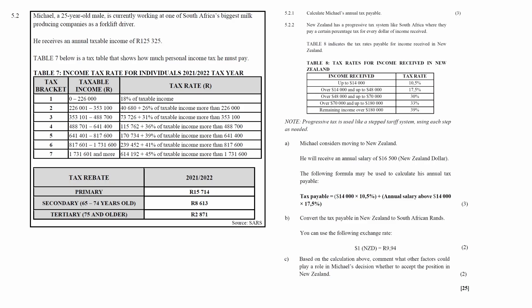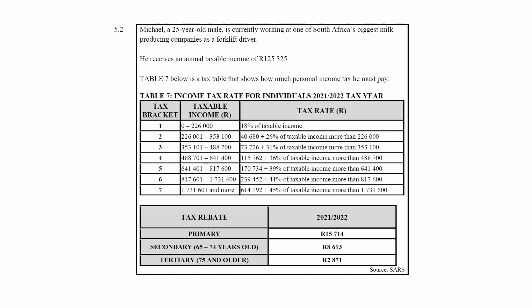Question 5.2 consists of four finance questions designed to assess your understanding of personal income tax. You are given a context where a 25-year-old male is currently working in one of South Africa's biggest milk producing companies as a forklift driver. He receives an annual taxable income of R125,325. Table 7 is a tax table that shows how much personal income tax he must pay.